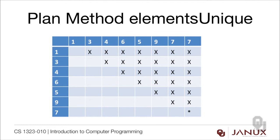The plan: compare the first element with all others — 1 is compared to 3, 4, 6, 5, 9, and both sevens. Since 1 isn't equal to any of those, we move on and compare the second element, 3, to 4, 6, 5, 9, 7, 7. Notice we don't need to compare 3 to 1 because we did that in the previous iteration — no reason to repeat it. This is clearly a triangular pattern. The pattern doesn't stop until the last iteration, when the first seven and second seven are found equal and we return false.